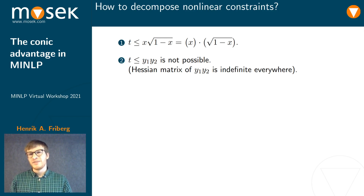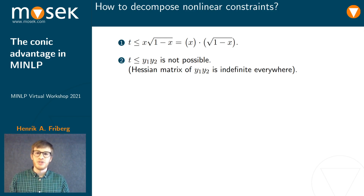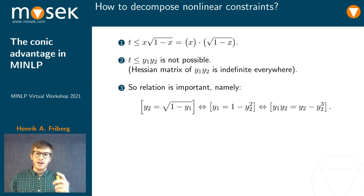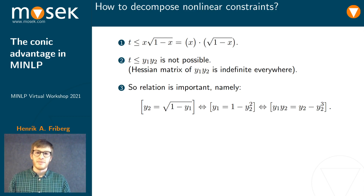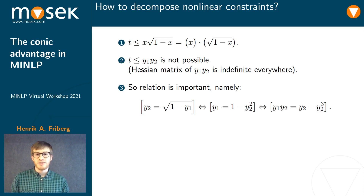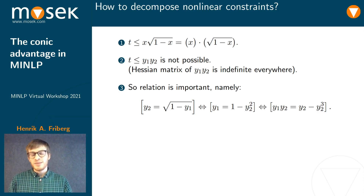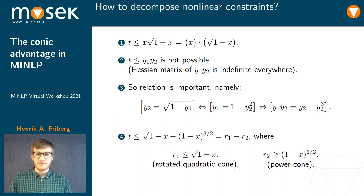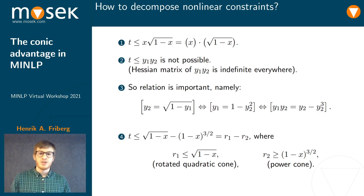This tells us that the relationship between the two operands is going to be very important. y₂ can easily be written as a function of y₁, which gives an expression for y₁ as a function of y₂. By multiplying both sides by y₂, we obtain a new representation of the product. Substituting back the definition of y₂, we get a conic reformulation with two terms: a rotated quadratic cone and a power cone.